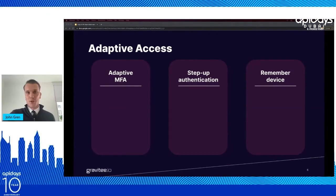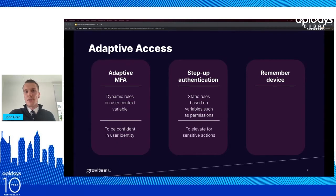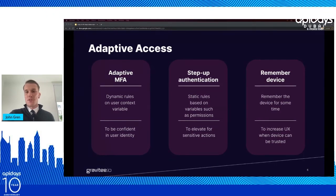Adaptive access lets you tailor your authentication flow in the access management solution, prompting additional factors only when needed. Common flows are adaptive MFA, step-up authentication, and remember device. Adaptive MFA takes users' contextual information into consideration and prompts MFA if confidence about the user's identity is low, such as after multiple failed login attempts. Step-up authentication allows the user to access the app with a less secure method, but prompts MFA if a static rule applies, such as when initiating a payment. Remember device lets the user register their device in the access management solution as a trusted device, so they don't have to provide multi-factor authentication every time. All of these policies can be used together, so it's important to understand the order in which they are executed when designing your MFA flows.